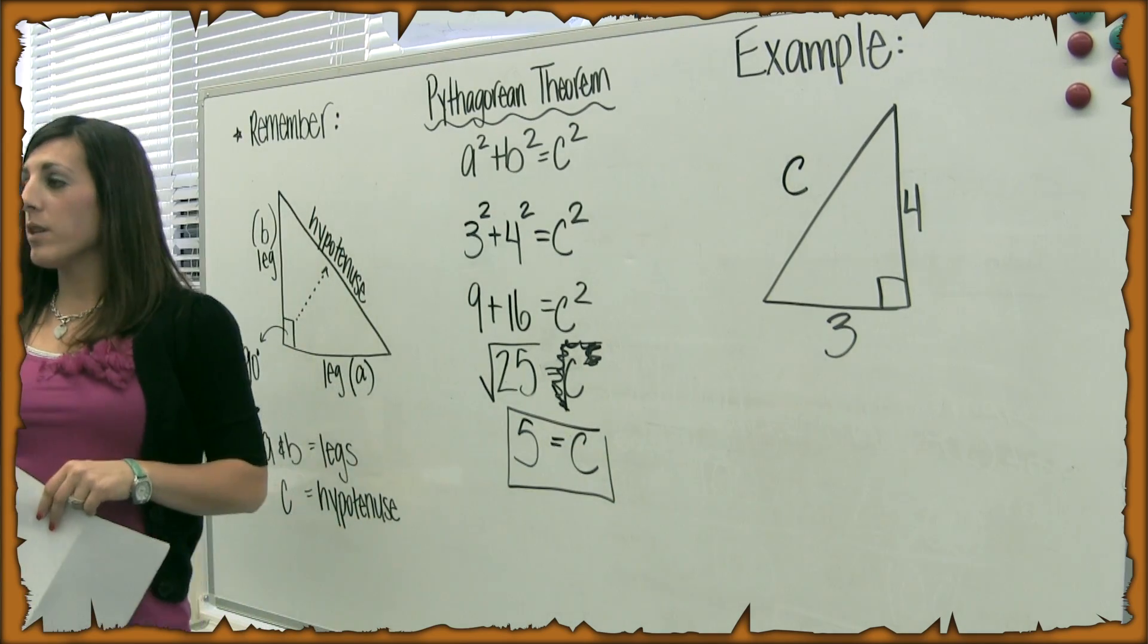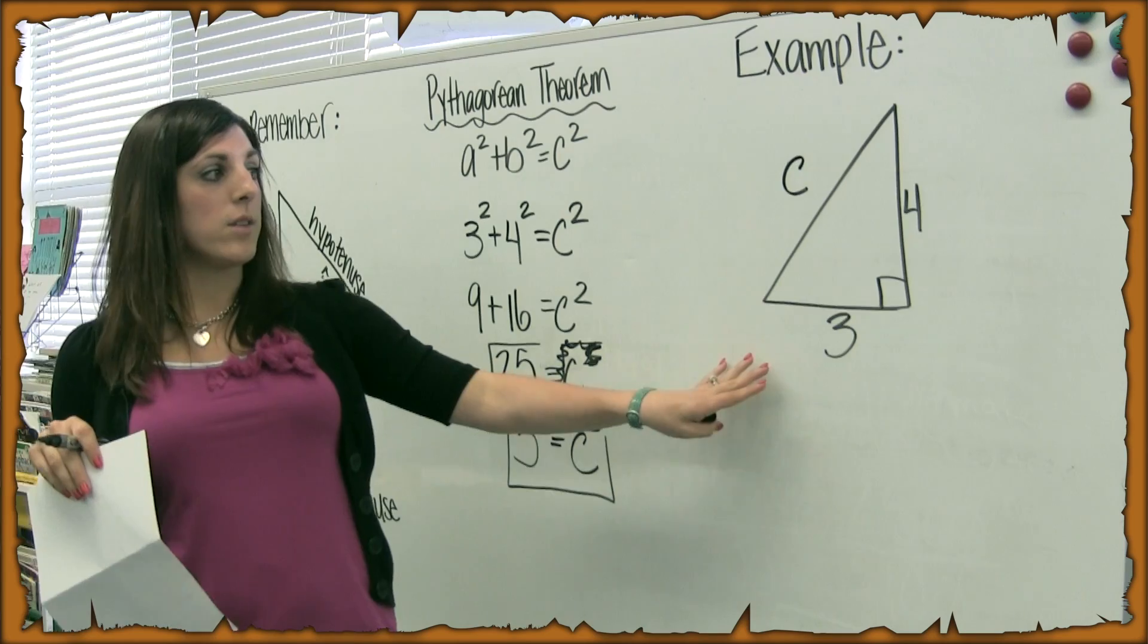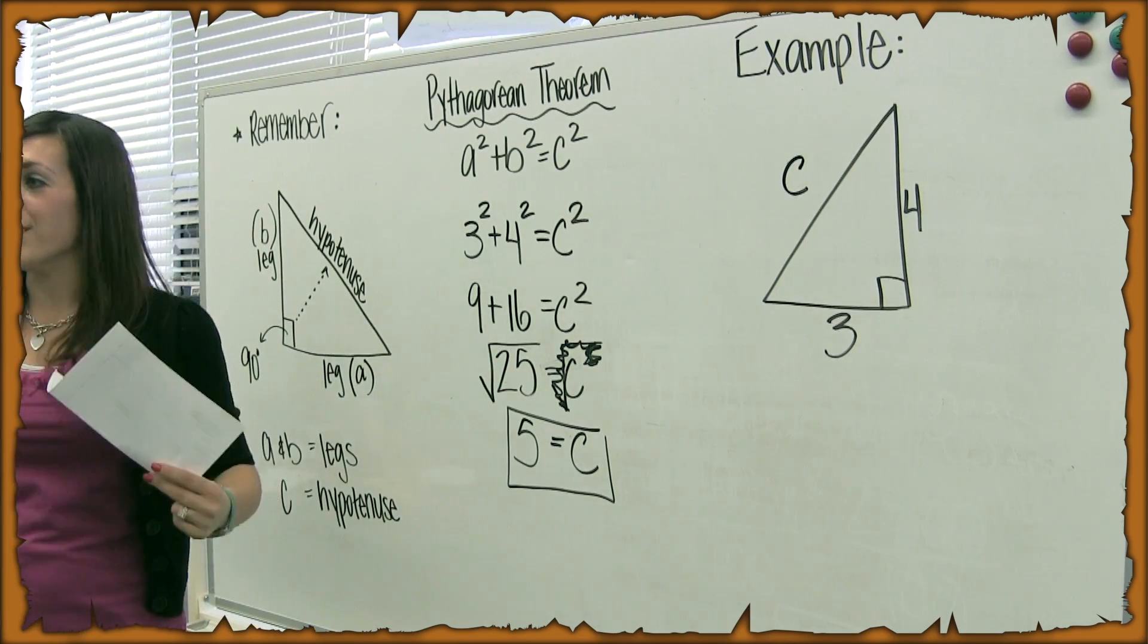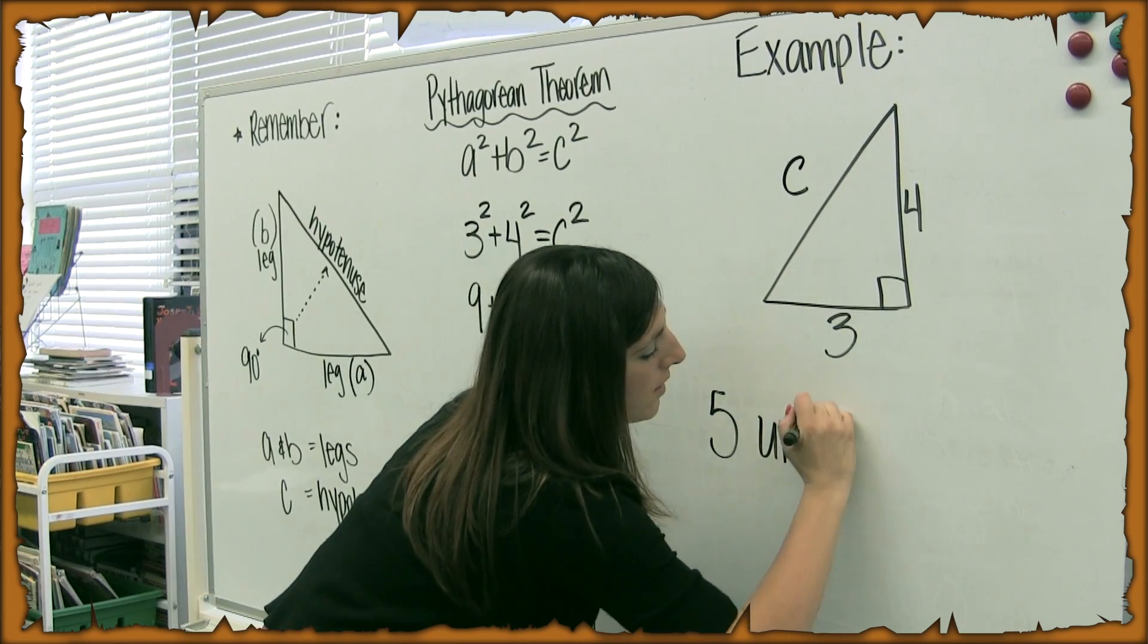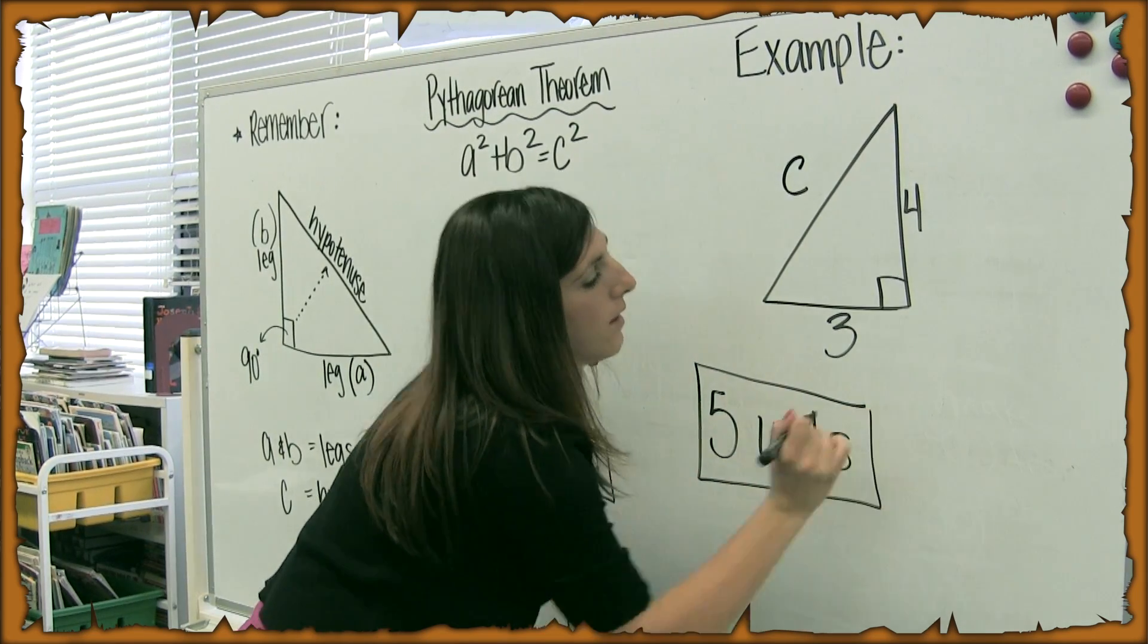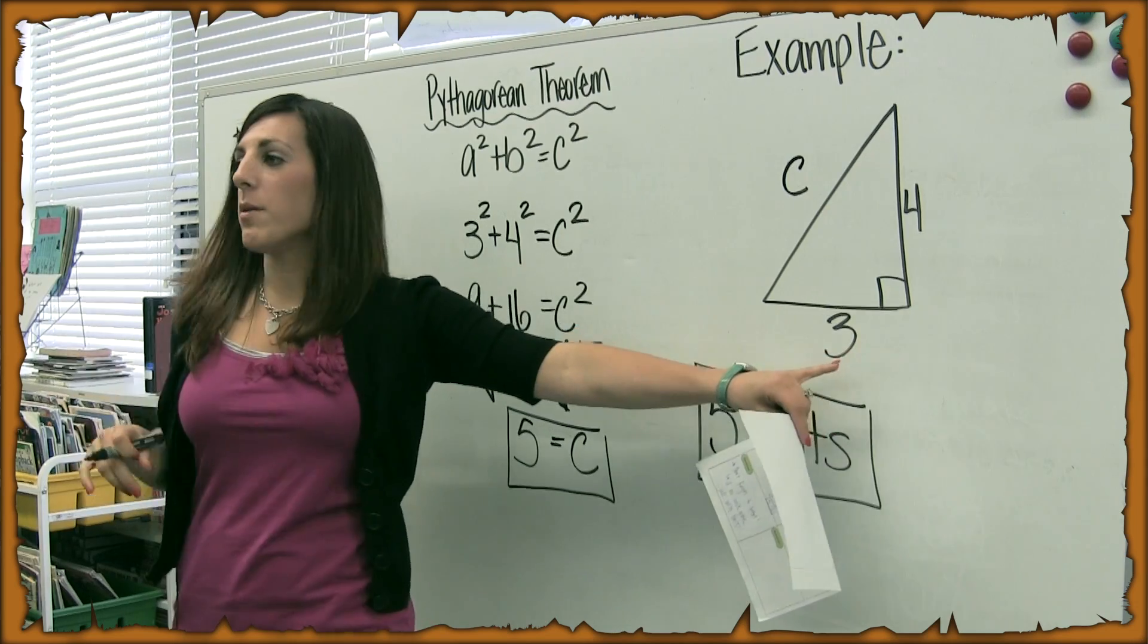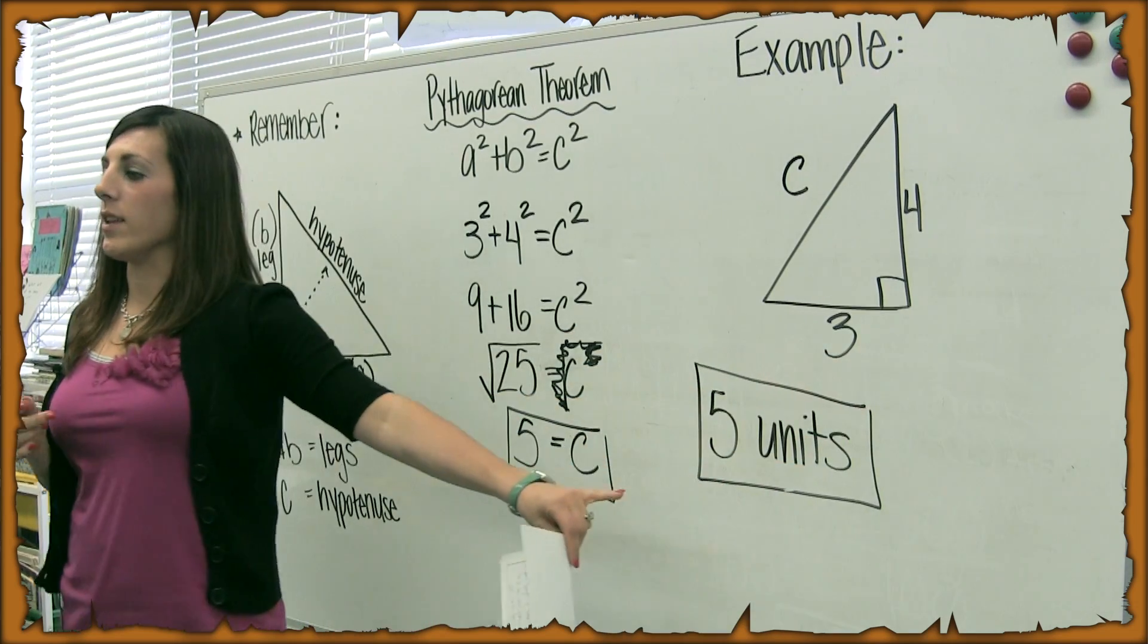I'm going to box in my final answer. The thing we need to remember at the end is to include your units. Here they don't give us units, so we're just going to use units in the end. So my answer is 5 units. If these were labeled with feet, or centimeters, or inches, then you would use that in your final answer.